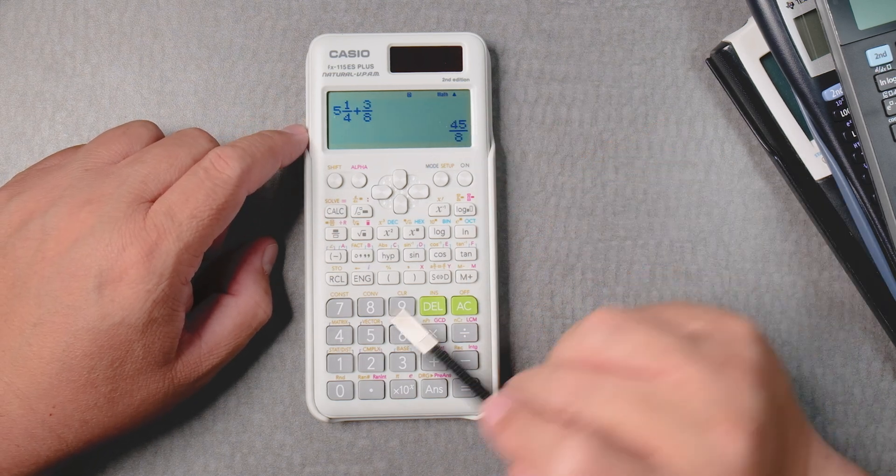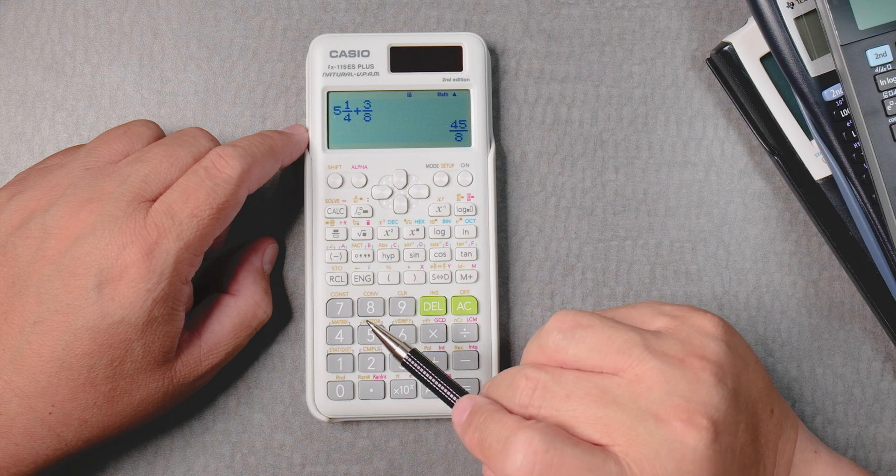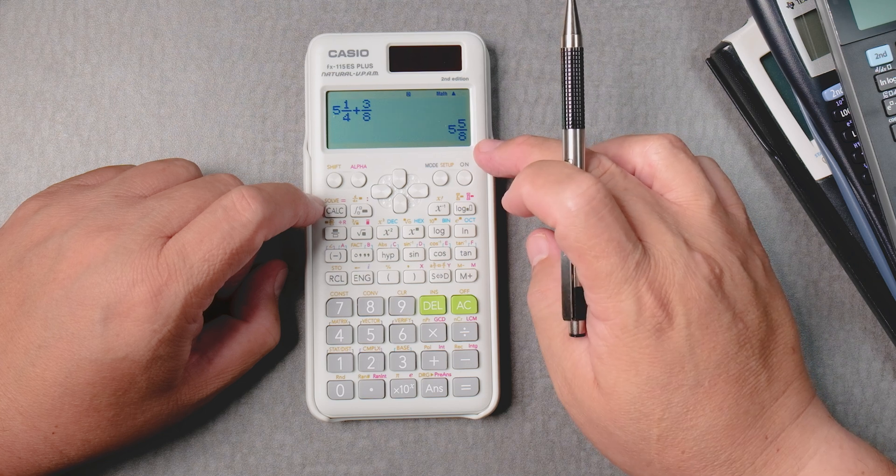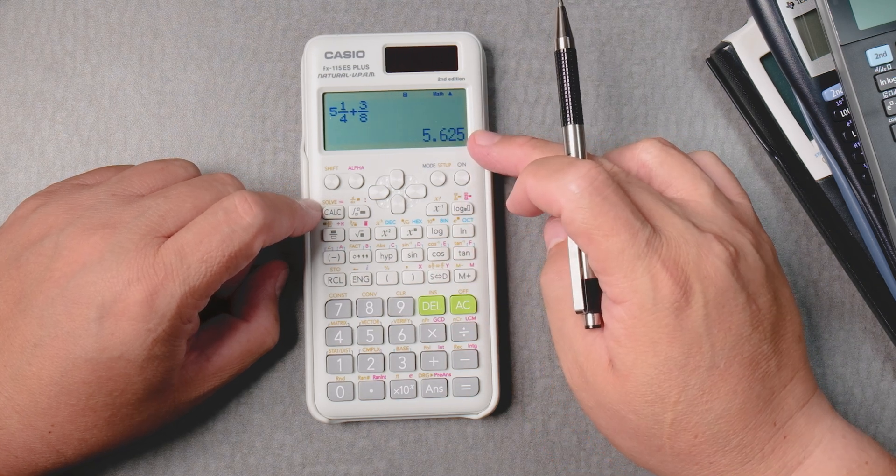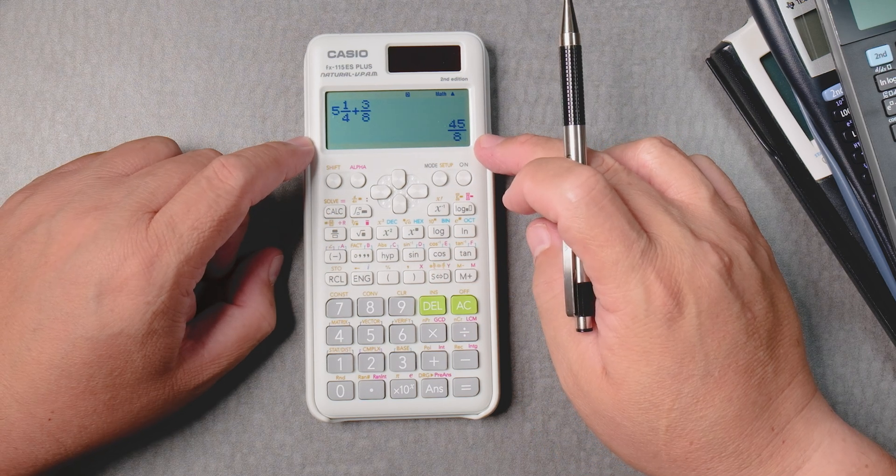Which you can change into a mixed number by shift, SD. Or you can change it into a decimal and you can press the SD button to give you an improper fraction.